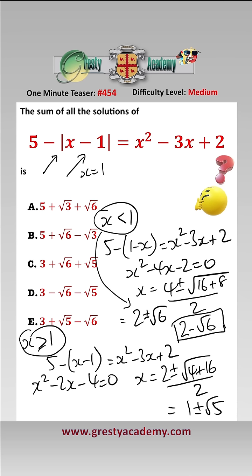Looking at the region, the only one of those two that's valid is 1 plus root 5. So our two solutions are 2 minus root 6 and 1 plus root 5, and when we add those together we get 3 plus root 5 minus root 6, which is answer E.